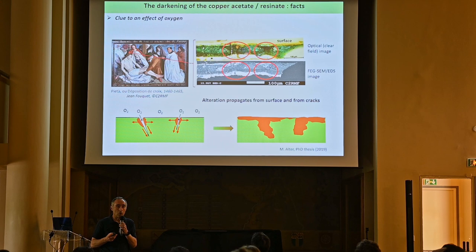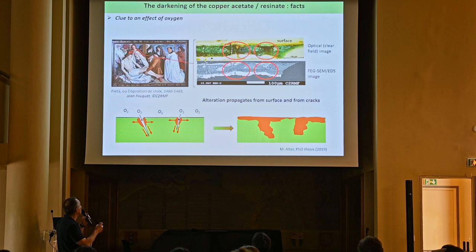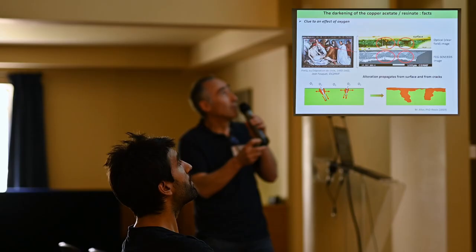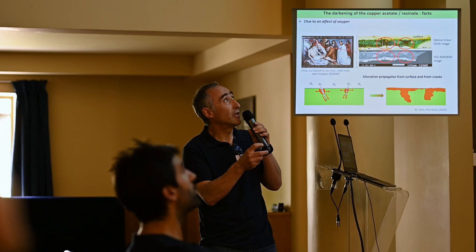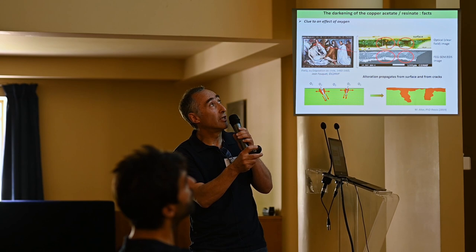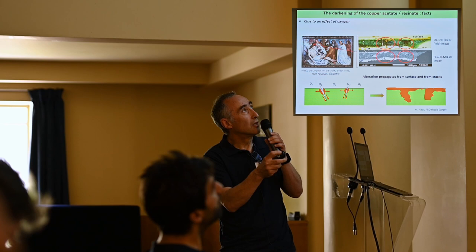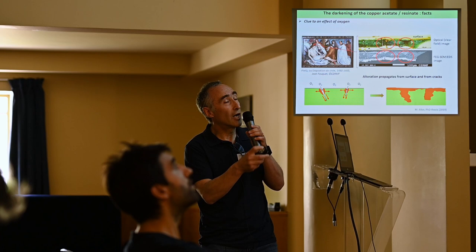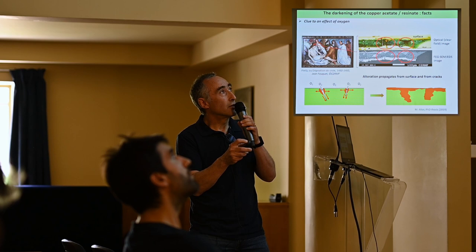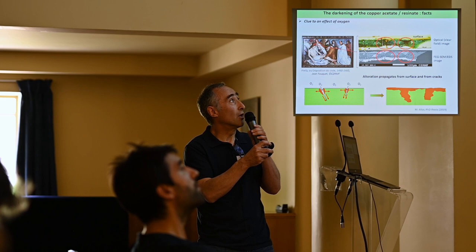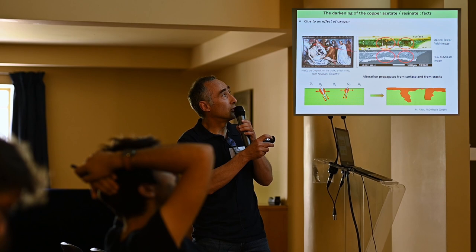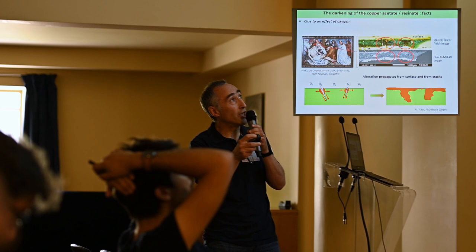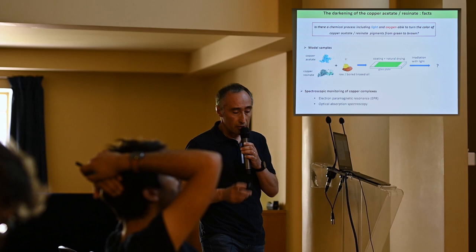Another example shows that oxygen may also interfere with the process. There is a sample from the painting Deposition de Croix by Jean Fouquet: on the optical image you can see that browning occurs only in specific areas — some areas retain their green color, while other areas develop browning. The browning develops in areas with a high density of cracks, suggesting diffusion of species — most probably oxygen — within the cracks, allowing penetration of browning in depth into the layer, and a slower diffusion perpendicular to the cracks, explaining the dendritic shape of the brown areas.